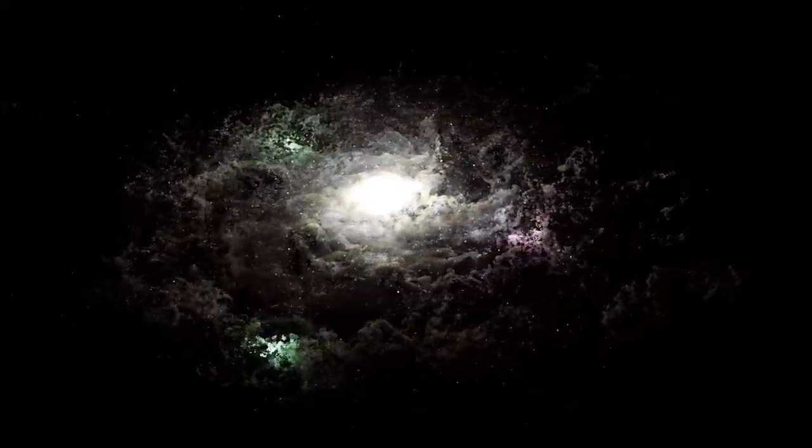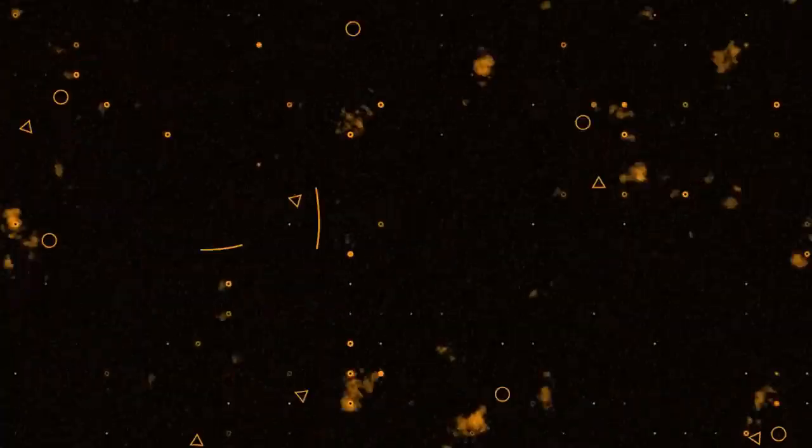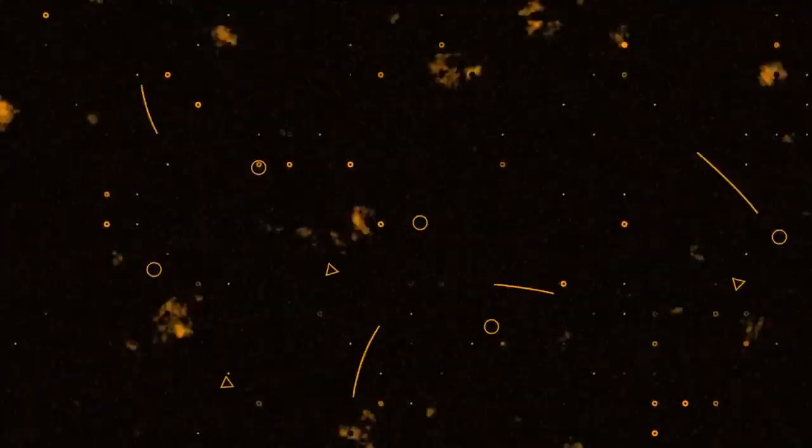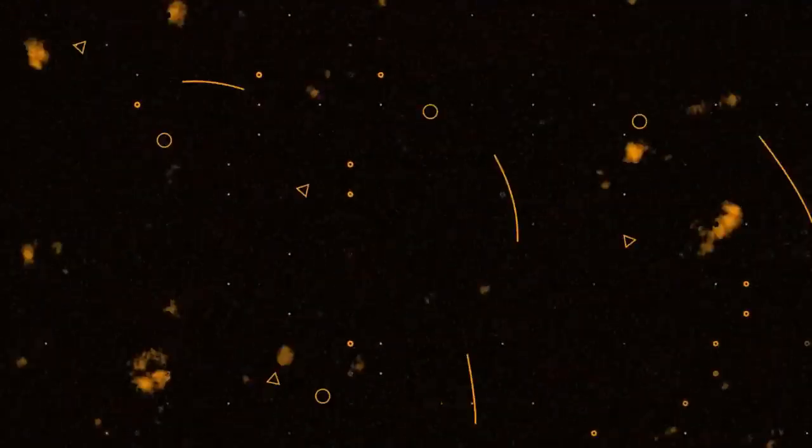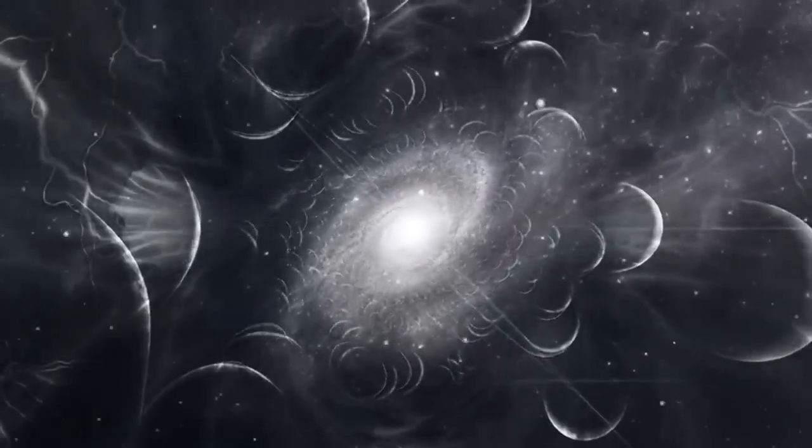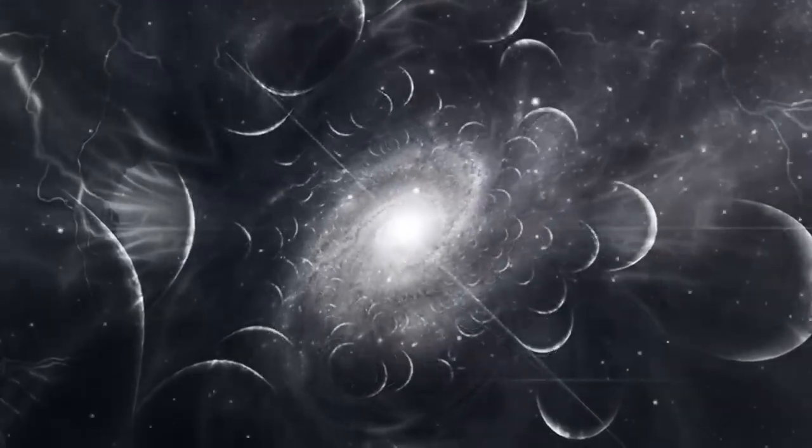The James Webb Telescope has also illuminated one of the universe's most elusive enigmas, dark matter. By observing gravitational lensing, where massive cosmic clusters bend light from objects behind them, Webb has helped create high-resolution maps of dark matter's distribution.